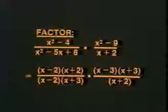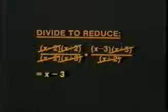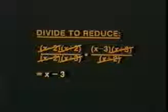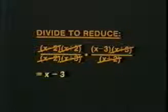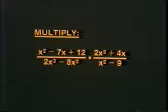Factor, divide to reduce, and then multiply. First, we factor. Then we simplify. And suddenly there's nothing left to multiply — just x minus 3, and that's the answer. This one may not be quite that simple, but you're ready for it now. Remember: factor, simplify, multiply, and that's it.